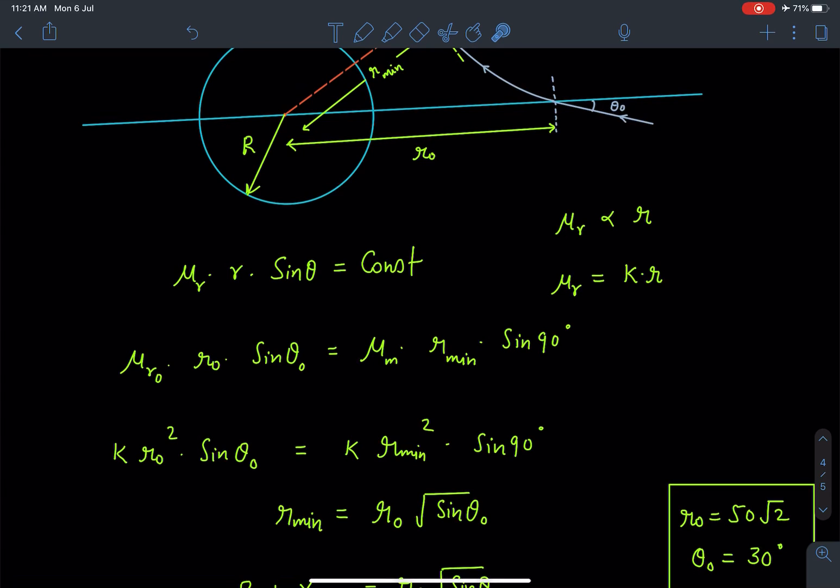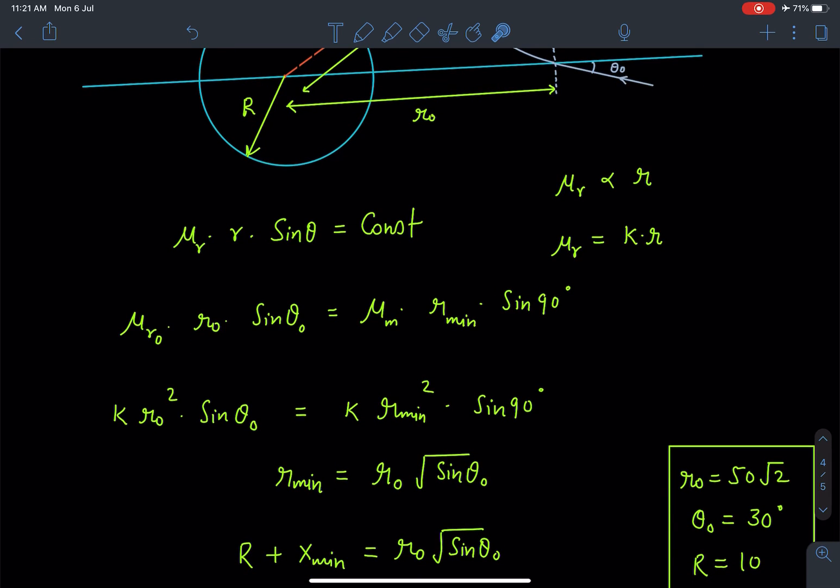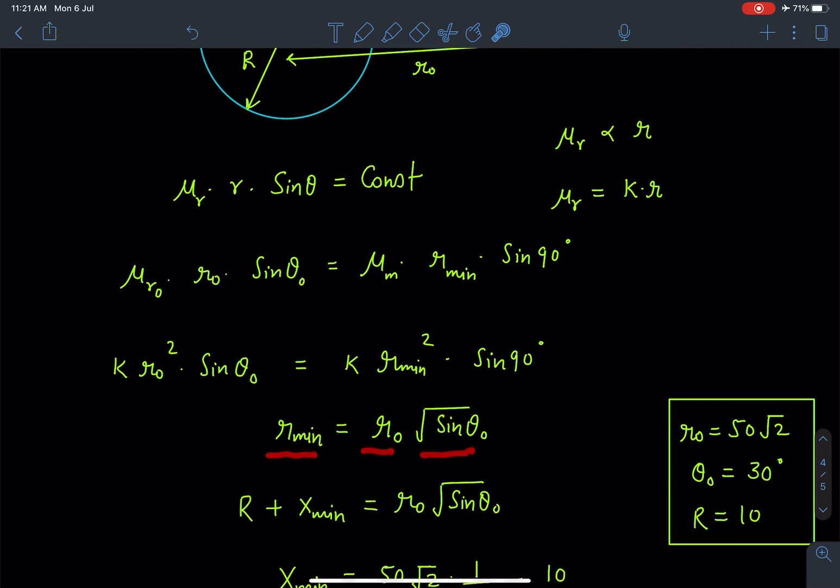So r_min I can find as r₀√sin θ₀. This r_min I can write as the radius of the sphere plus x_min, that is the distance from the surface.